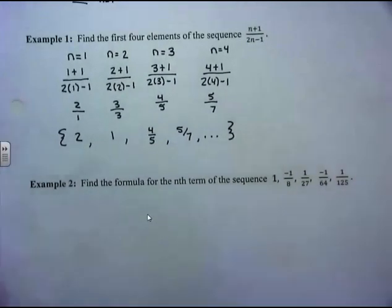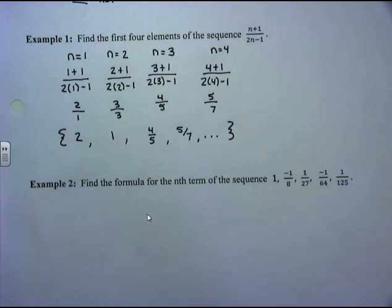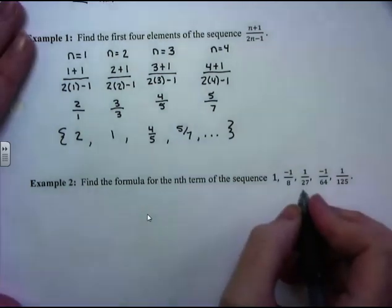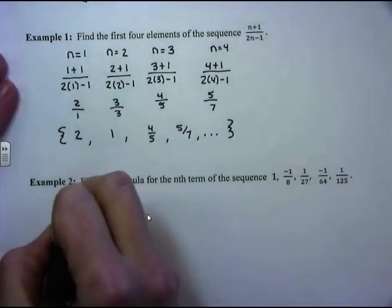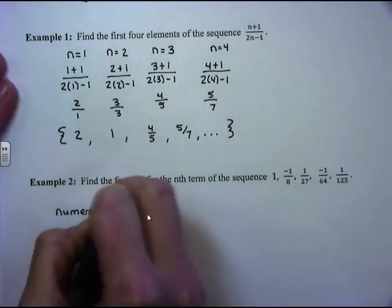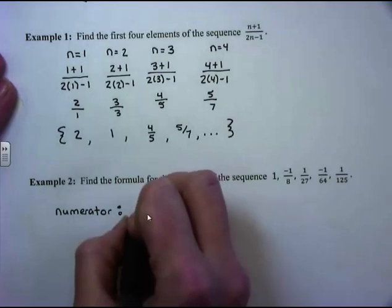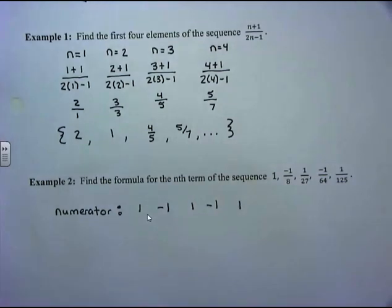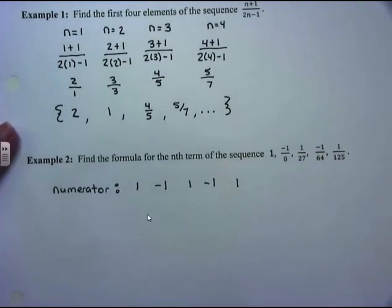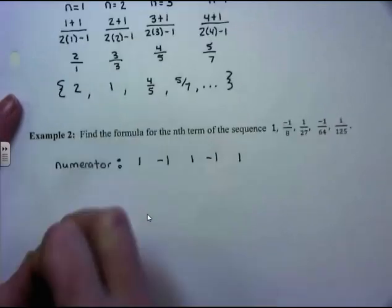Example 2 goes in the opposite direction — now they want us to find the formula for the nth term of an expanded sequence. The sequence given is 1, −1/8, +1/27, −1/64, and +1/125. I like to think about what's happening in the numerator and denominator separately. In the numerator, we're going from positive 1 to negative 1 to positive 1 to negative 1 and so forth, so our formula needs to generate alternating signs.